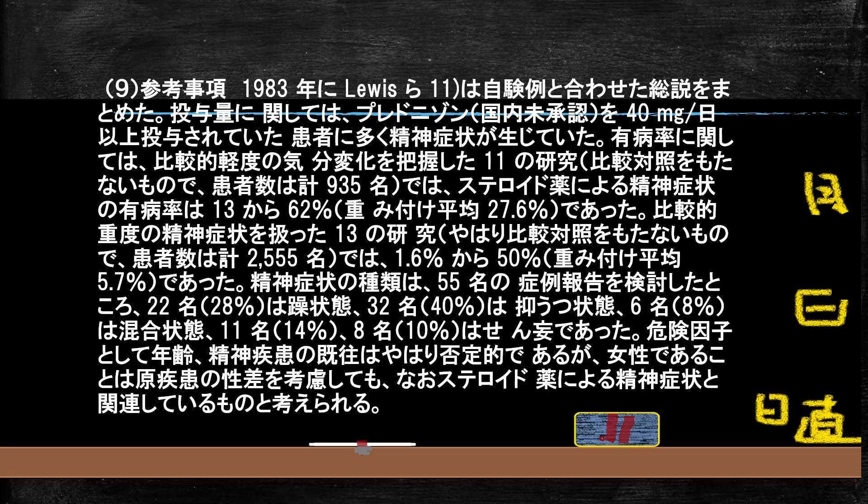症状の種類を見ると、躁が28%、うつが40%、混合状態が8%、そしてその他として痙攣などとなっています。前にお伝えした双極性障害の動画でも言いましたが、薬で双極性障害が起こるということで、ステロイドでも躁もうつも混合状態も全部出ると。薬を使っていると出るわけです。